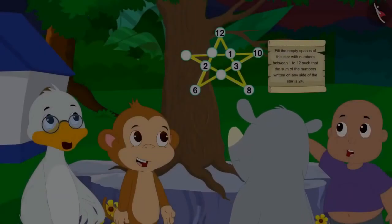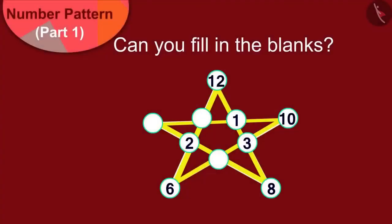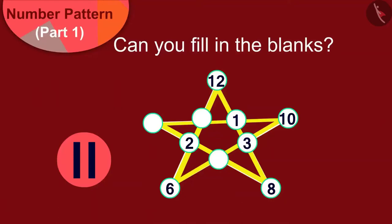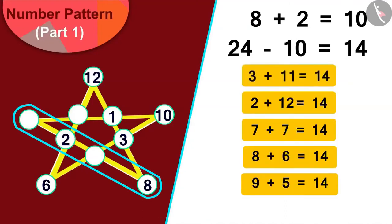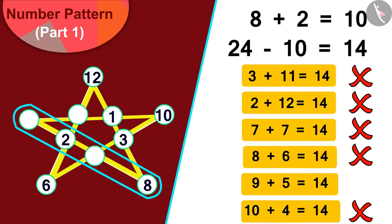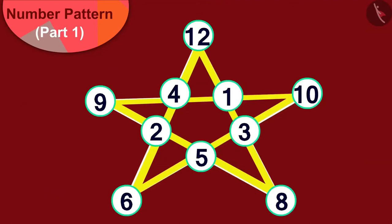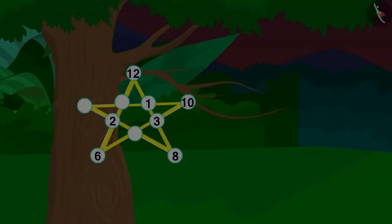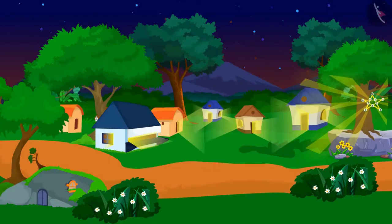All the villagers got very excited. Now everyone started trying to fill in the blanks written on the star. Children, can you also fill in the blanks of this star together with the villagers? You may stop the video and find a solution with your friends. Well done children, you have found the answer correctly. We can fill in the blanks of the star in this way. As soon as the villagers filled the blanks of the star, light started coming out from the star and the electricity of the village resumed.